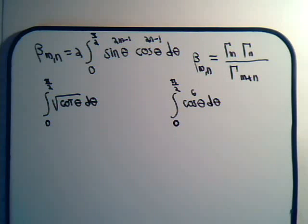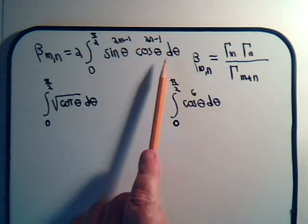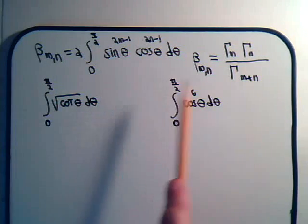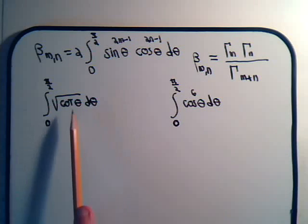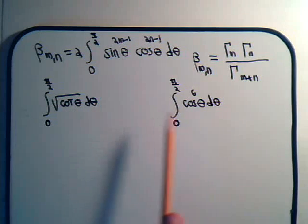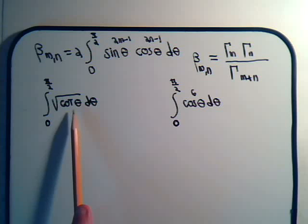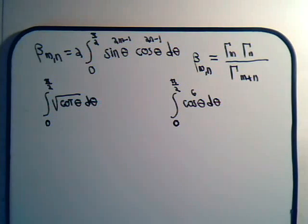In this video we're going to use the trig form of the beta function and its relation to the gamma function to solve two types of trigonometric integrals. Both of them are a pretty straightforward application of the beta function.